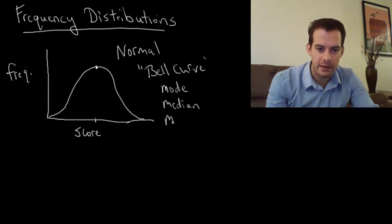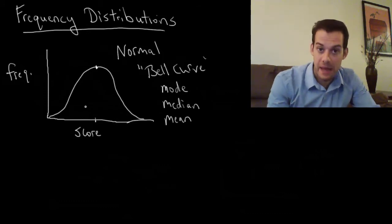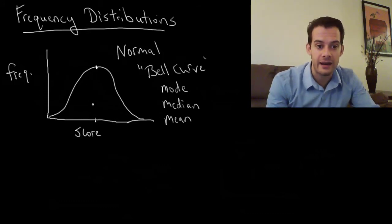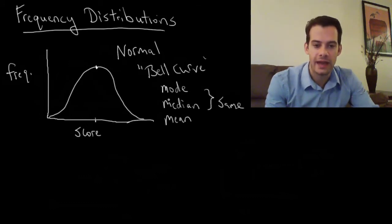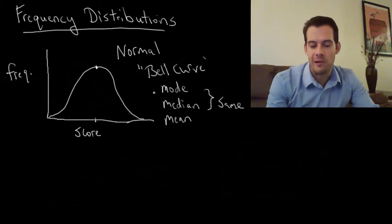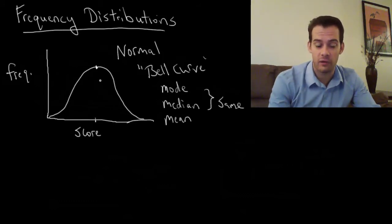And how about our mean? Well if these are symmetrical, then they're going to sort of balance each other out and the mean is going to end up also exactly in the middle. So if we have a normal curve, then we know that our mean, our median, and our mode are all going to be at the same point on our graph.